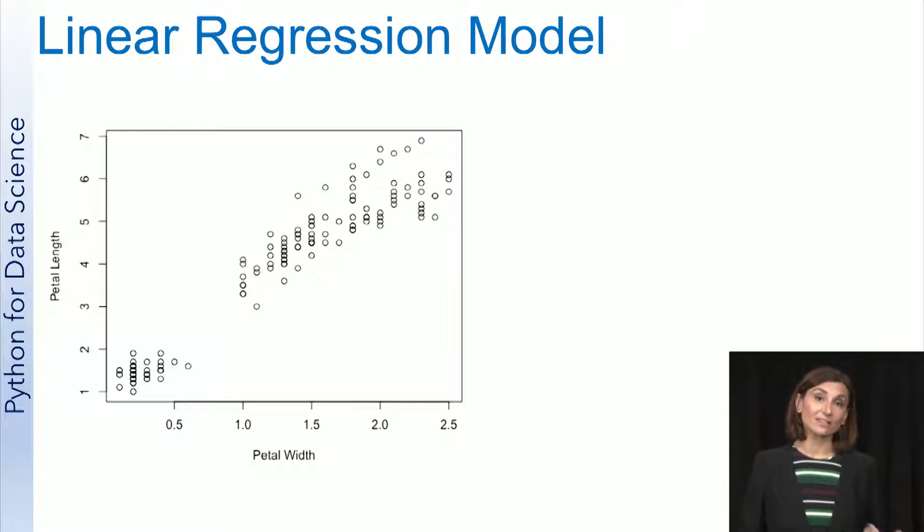To see how linear regression works, let's take a look at an example from the Iris Flower data set, which is a commonly used data set for machine learning. This data set has samples of different species of Iris flowers, along with measurements such as petal width and petal length.